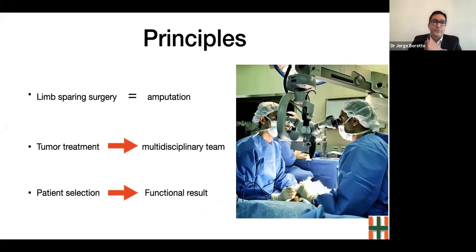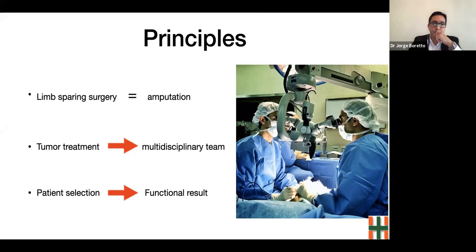The main principle of treating oncological patients is to obtain with limb-sparing surgery the same oncological prognosis that we can obtain with amputation. Another very important principle is about the multidisciplinary team that has to be involved during the management of this patient: oncologists, radiotherapists, pathologists, oncological orthopedic surgeon, and finally the reconstructive microsurgeon.